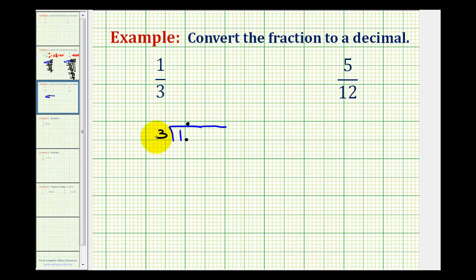So notice that there are no threes in one, but if we put a zero here, we can ask how many threes are there in ten? Well, there are three threes in ten. Three times three is equal to nine, and we subtract. This difference is one, and since this difference isn't zero, we have to keep adding zeros until it terminates or repeats with the pattern.